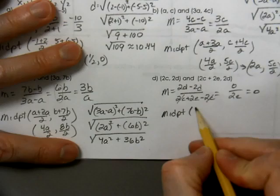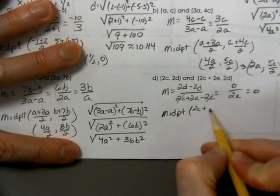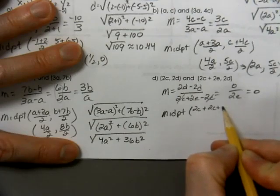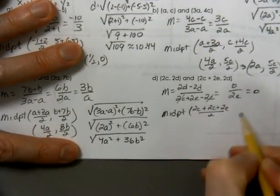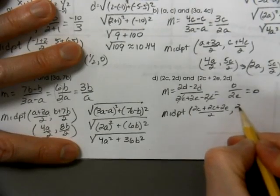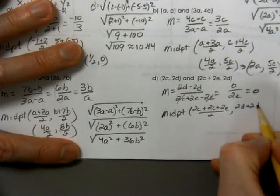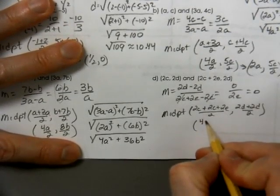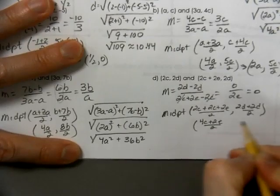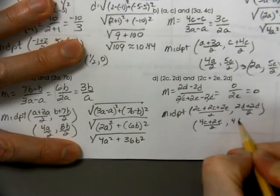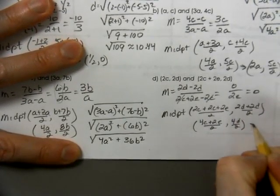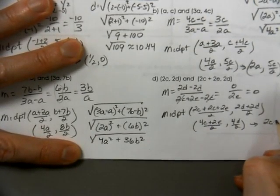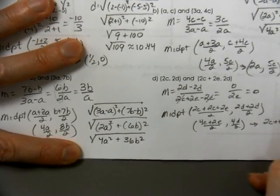Our midpoint is the average of our x's and the average of the y's. So, here we have 4c plus 2e over 2 and 4d over 2. That's going to become 2c plus e comma 2d.